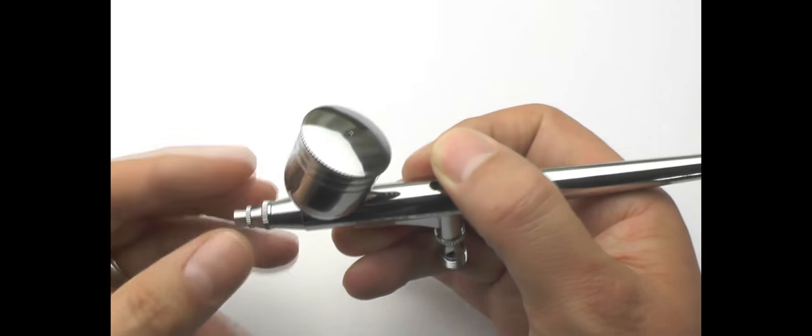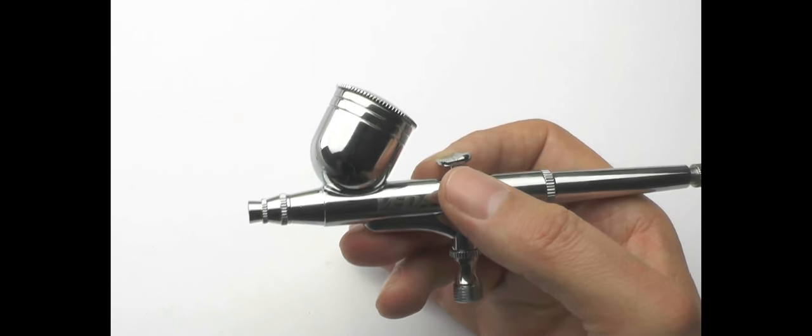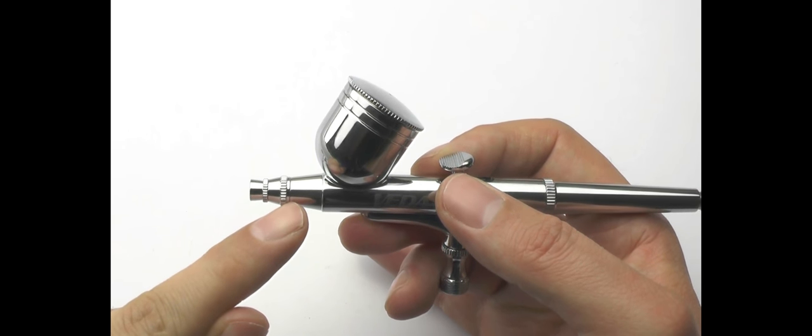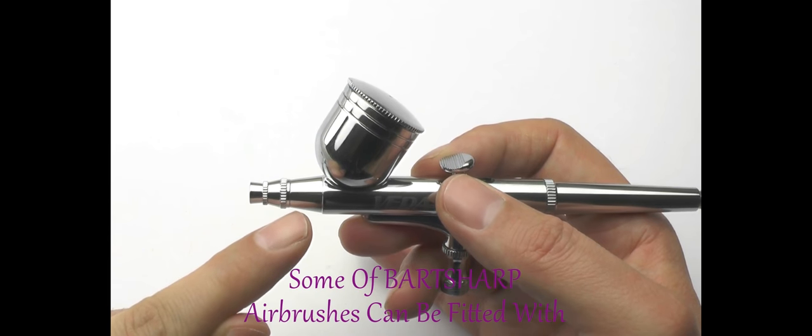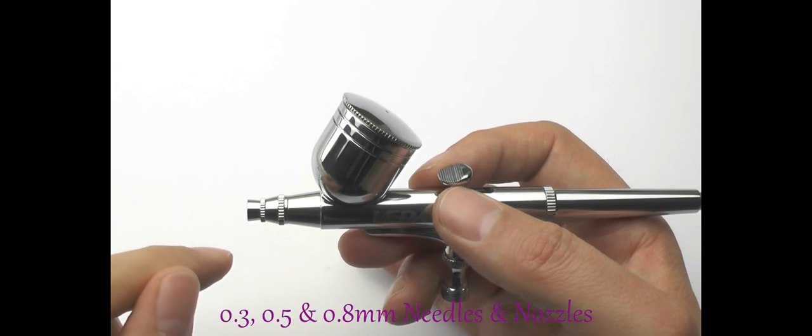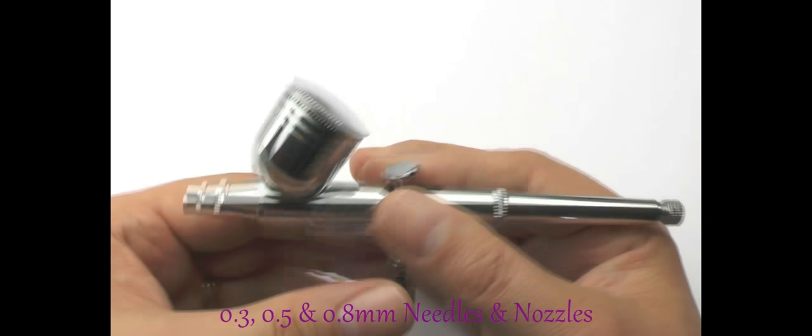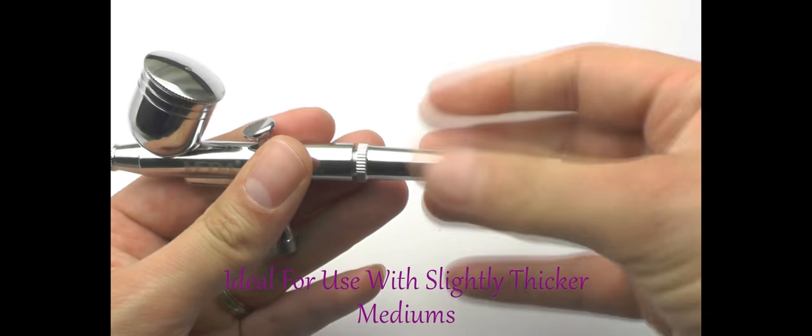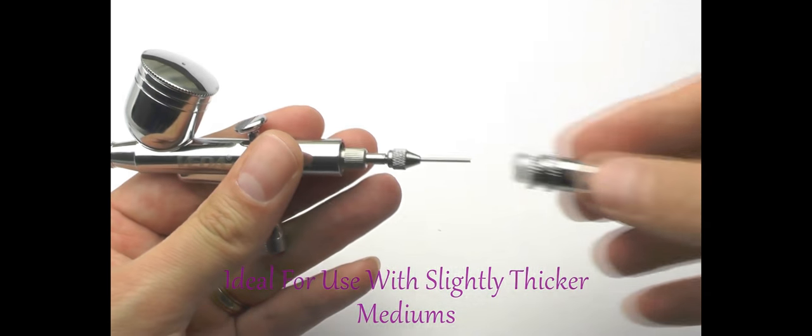So a lot of the airbrushes come with various size needles, nozzles, nozzle caps, and generally speaking they're 0.2, 0.3, 0.5 millimeter. The needle cap is a one size fits all really, so don't worry too much about that. Let's go to the back section and this is where the tail end of the needle is housed.